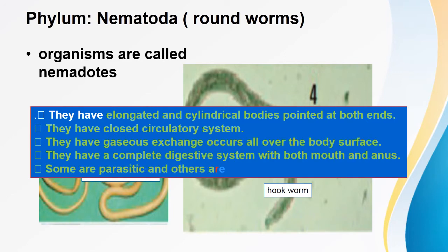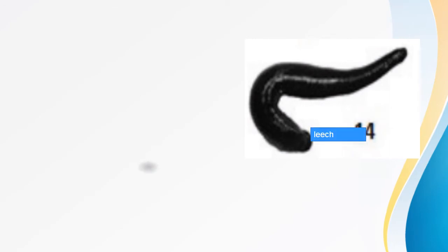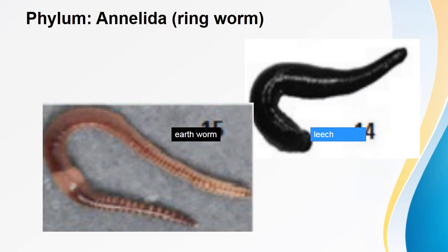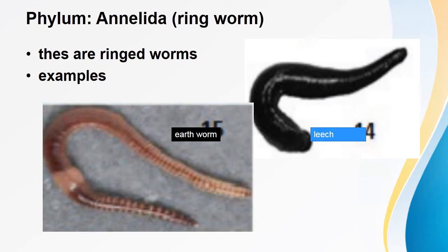Phylum Annelida — organisms include the leech and the earthworm. When you look at these organisms, they have ring-like structures around their bodies, which is why we call them ringed worms. Characteristics of annelids: the body has three layers of cells. They have a true coelom. They have a closed circulatory system. Gaseous exchange occurs over the body surface. They have a complete digestive system with anterior and posterior openings.